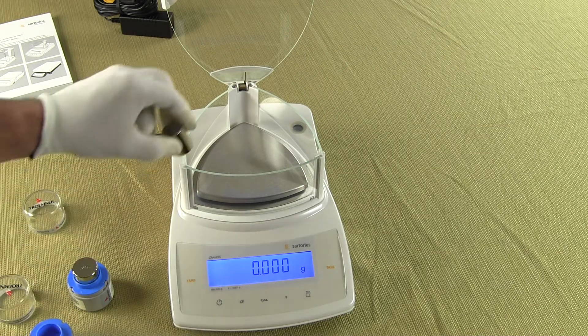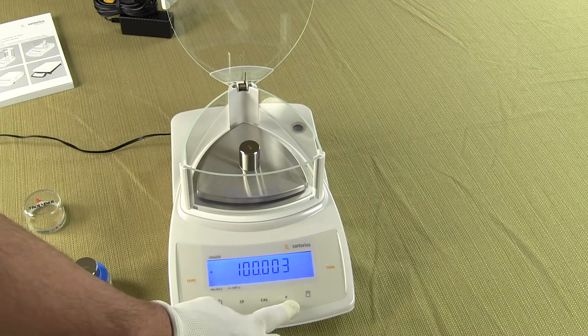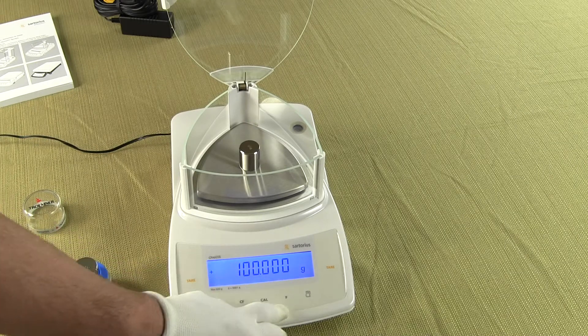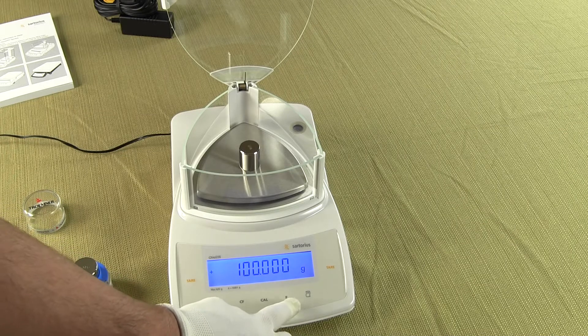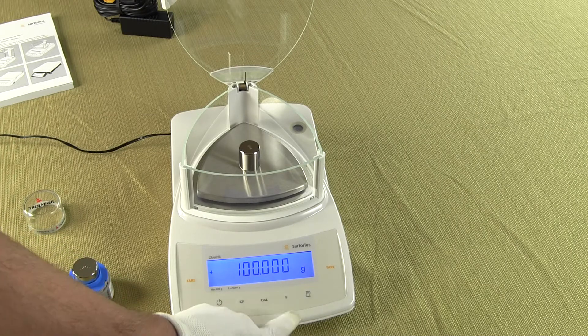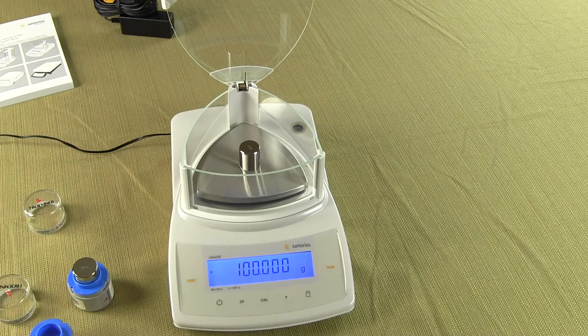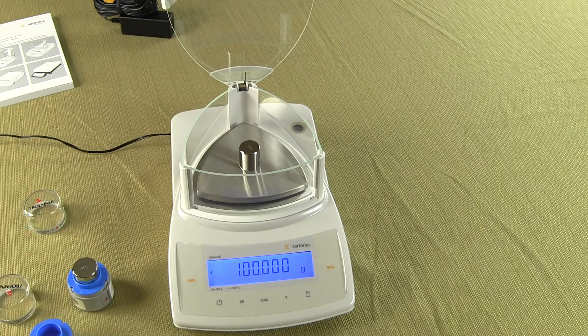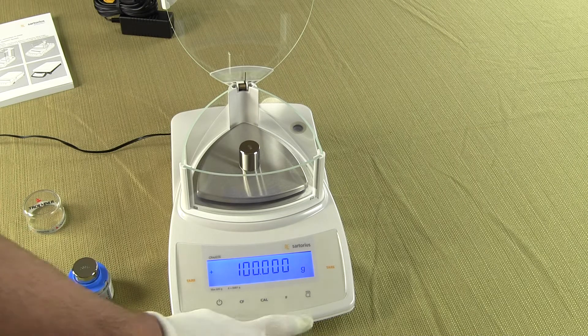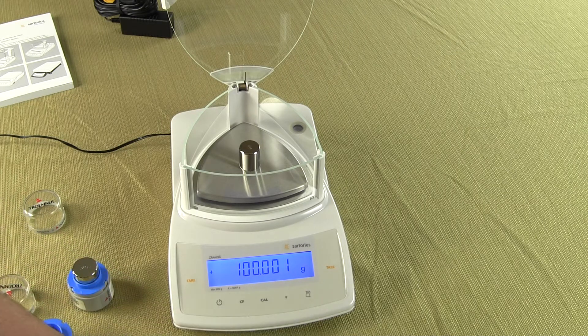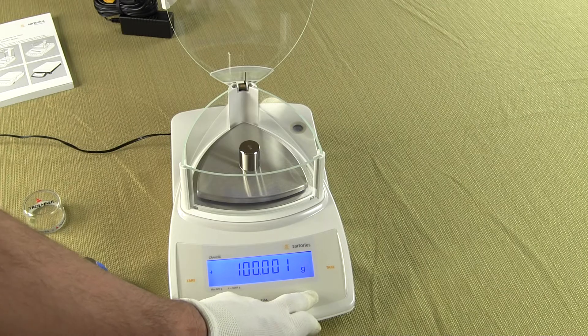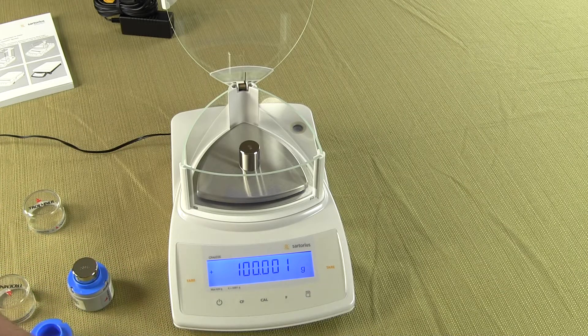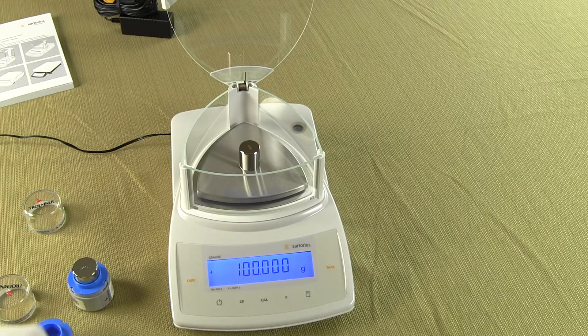The other functions would be you have an F key here, we could change the primary mode, right now is grams. If we set this up for a secondary weigh mode one simply presses the F key and it would switch. So you have about 13 different weigh modes you can set the balance up in. Out of the box the balance default is grams only. We also have all the way over on the right hand side we have the print key. This print key if one presses it would send the data to a PC or an optional Sartorius printer.